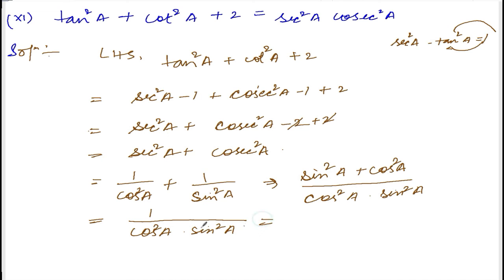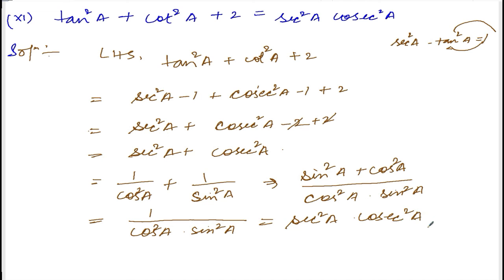So 1 over cos square a is sec square a, and 1 over sin square a is cosec square a. This equals the right hand side, and hence proved.